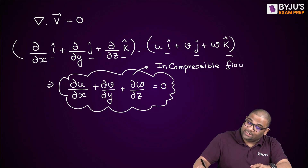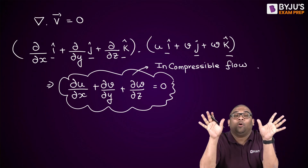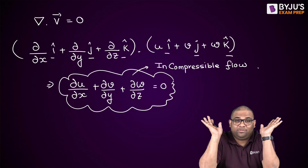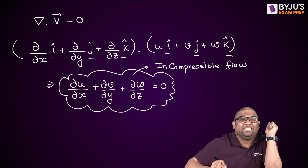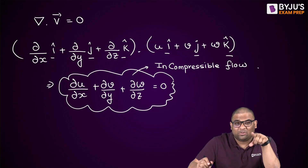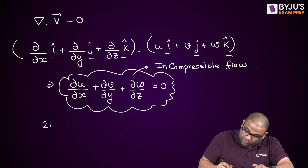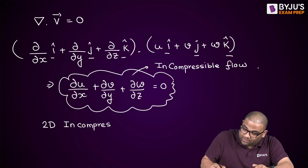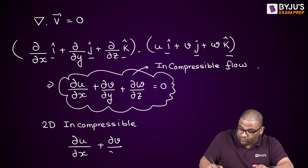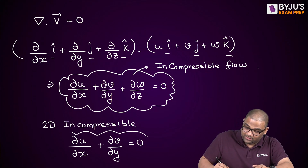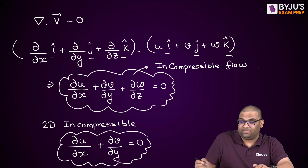If they ask you whether a flow is incompressible, just check this condition. If ∂u/∂x + ∂v/∂y + ∂w/∂z = 0 is satisfied, the flow is incompressible. For 2D incompressible flow specifically — since there is no z component — the condition simplifies to: ∂u/∂x + ∂v/∂y = 0.